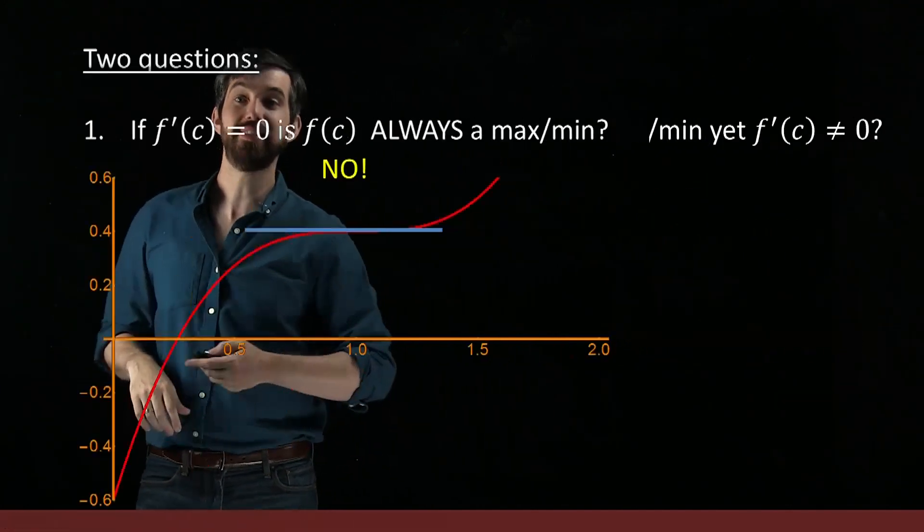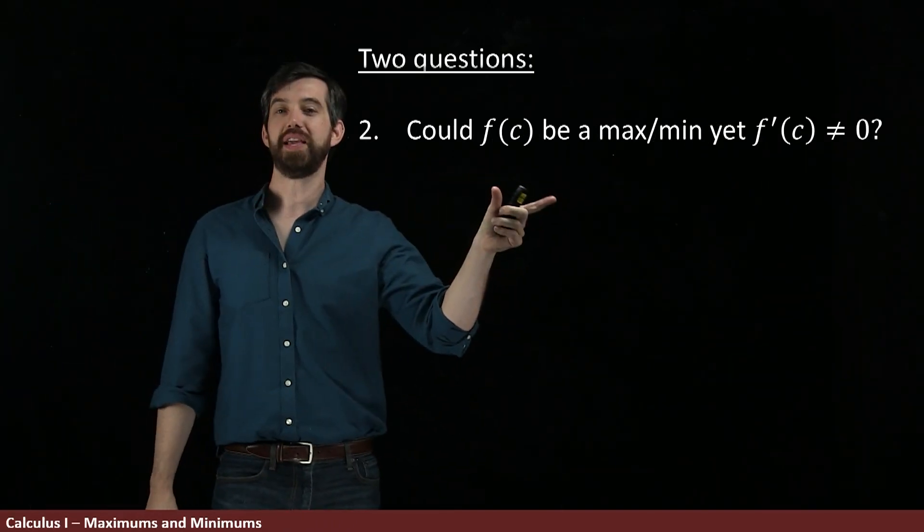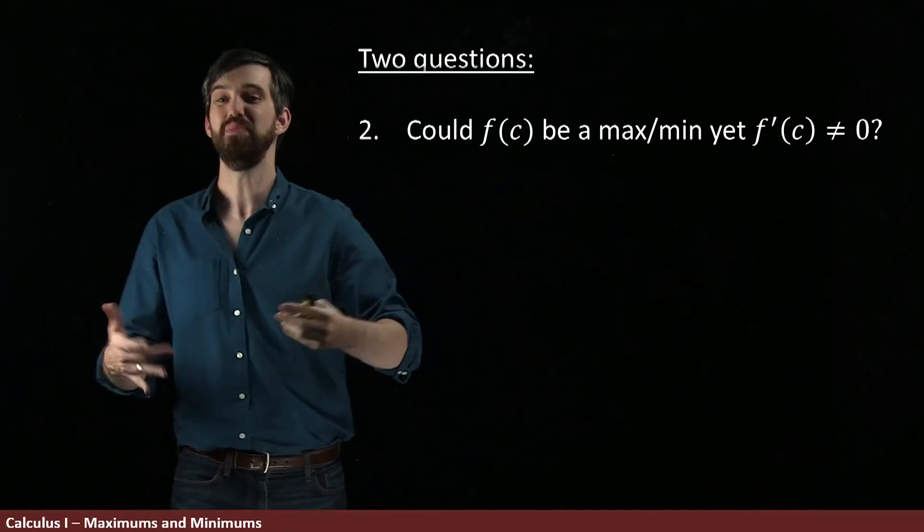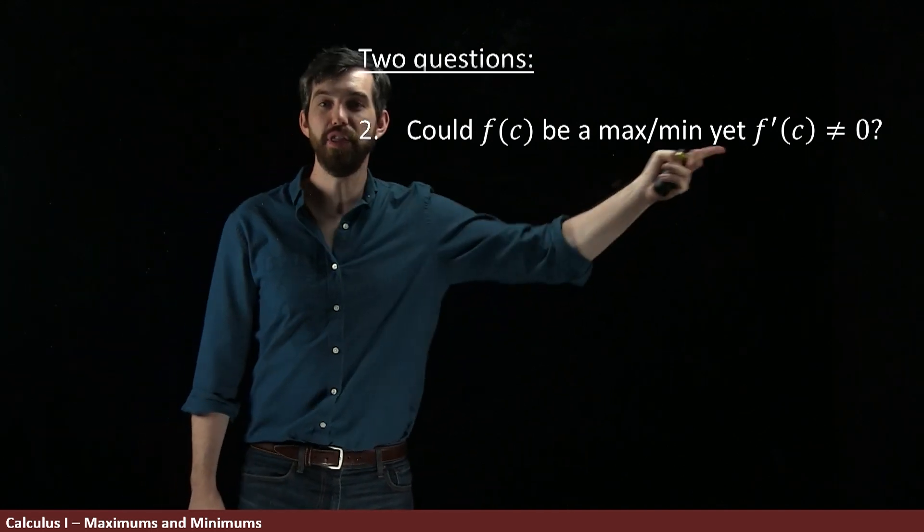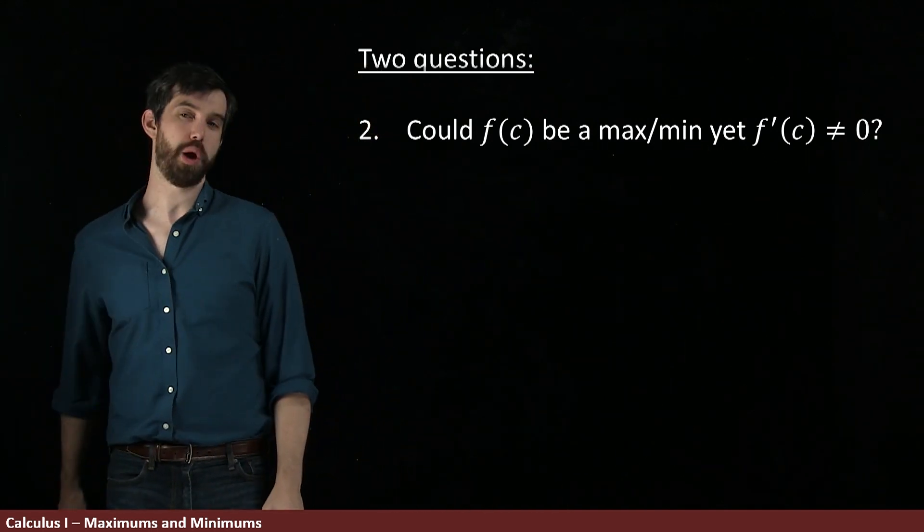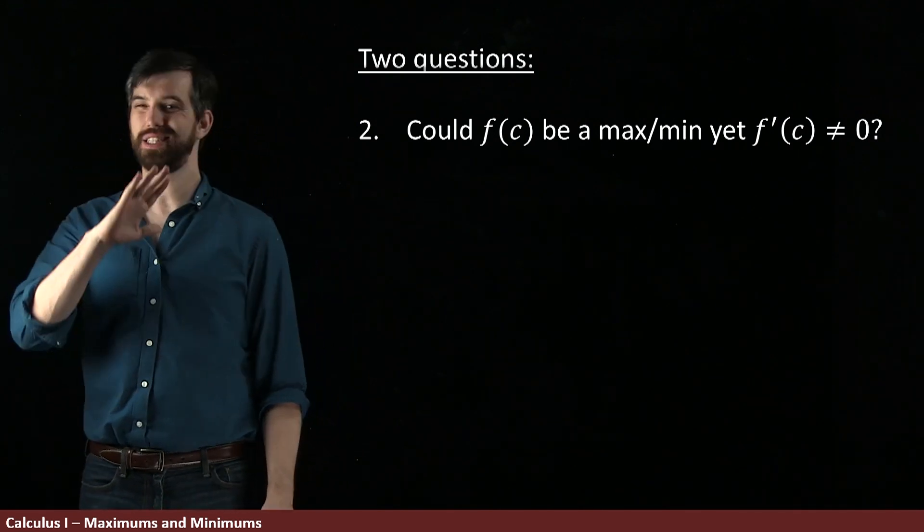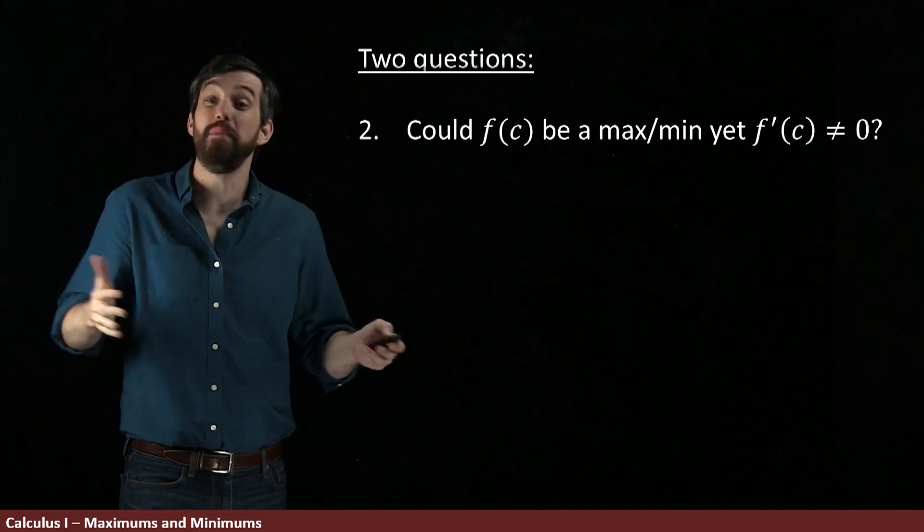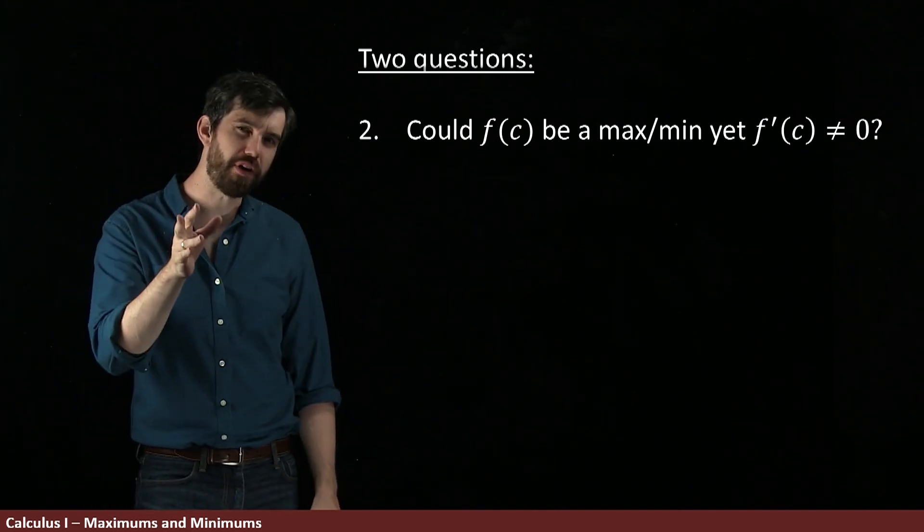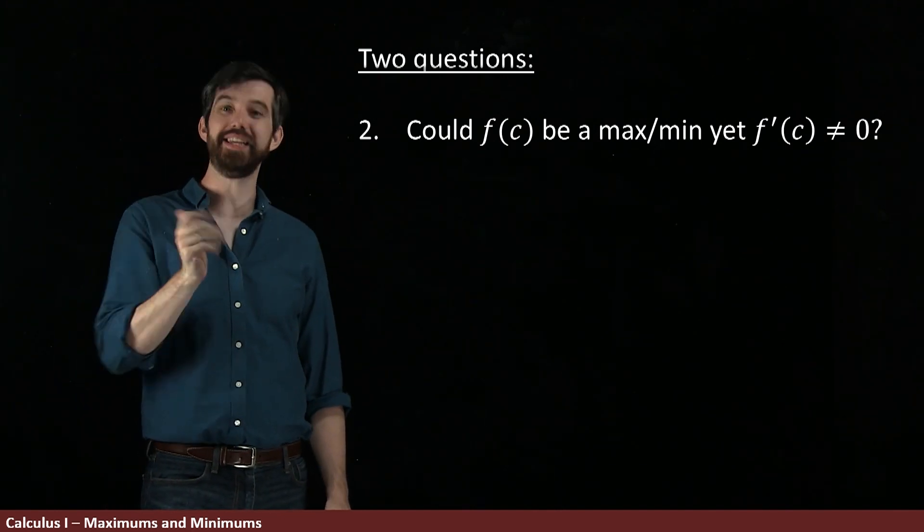Okay, so let's look at the second of the two questions. This was asking, could it be the case that f of c was a maximum or minimum, even though the derivative was non-zero? Now, it turns out that if it's any other value, like seven or three, that indeed it wouldn't be a maximum or minimum. However, what if the derivative didn't exist?